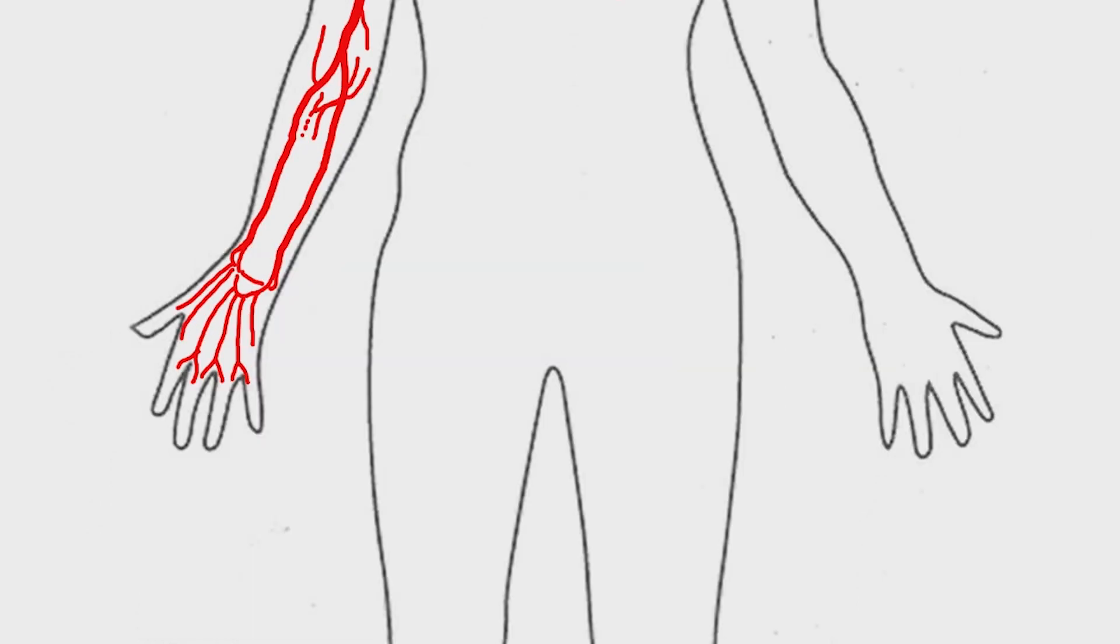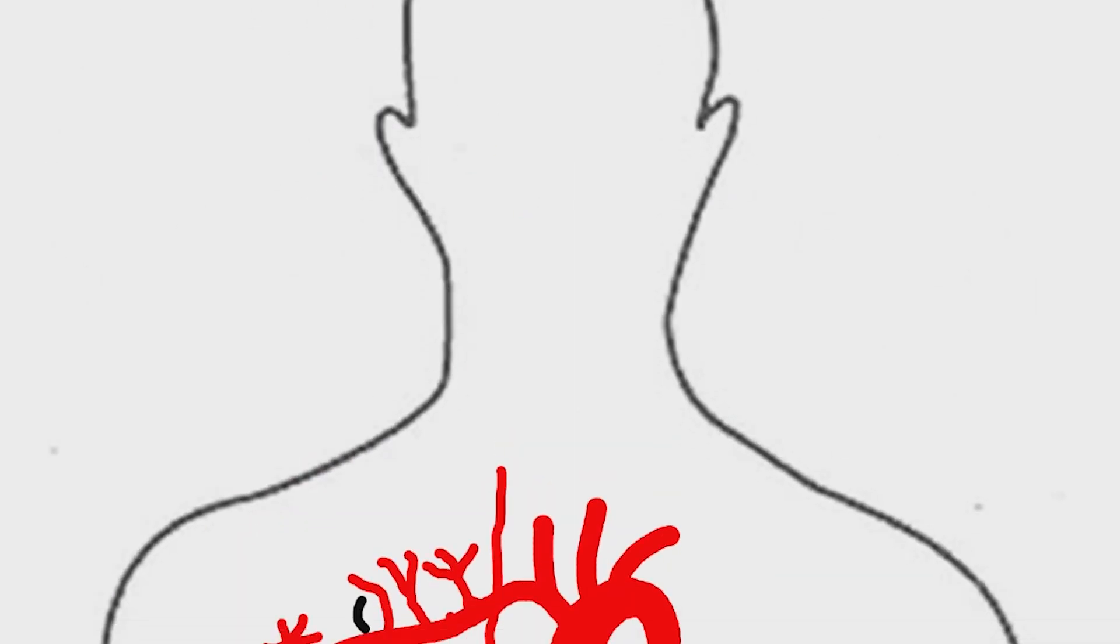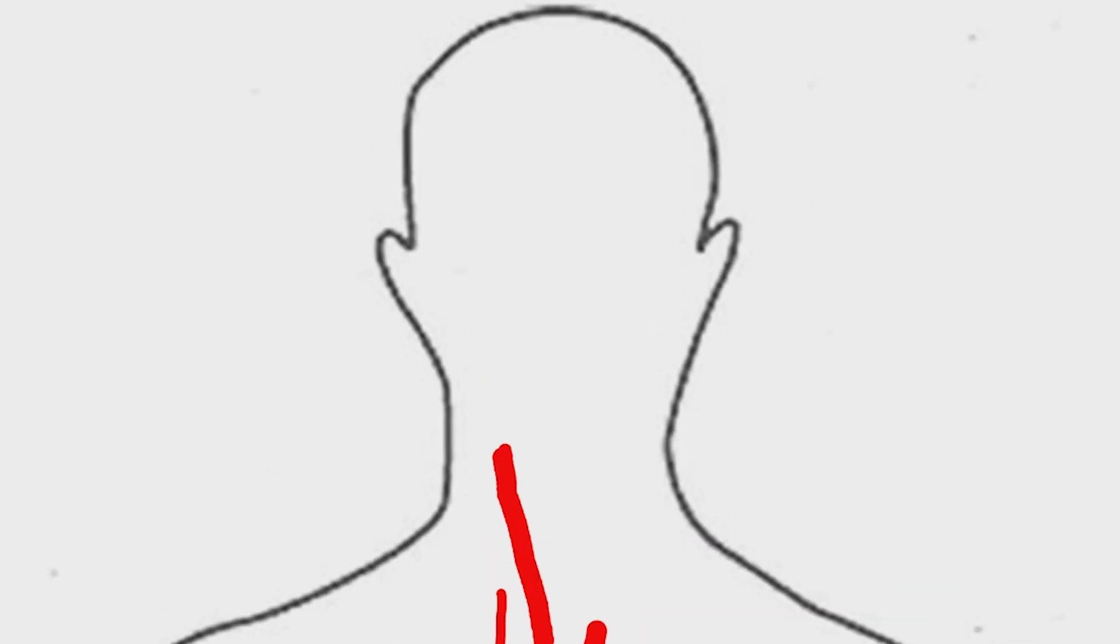Let's see the arterial tree of head and neck. The common carotid artery divides into external and internal carotid arteries.